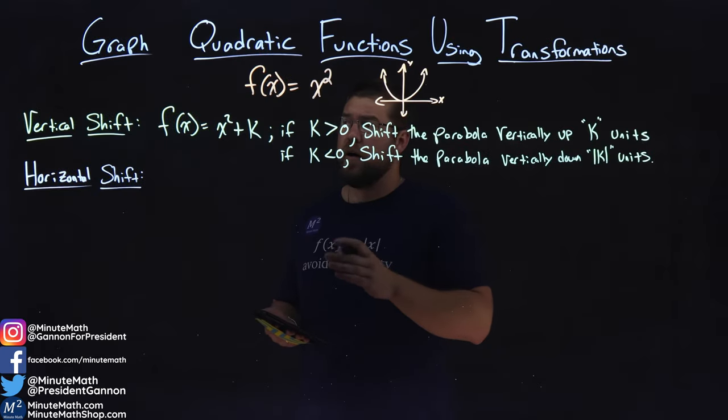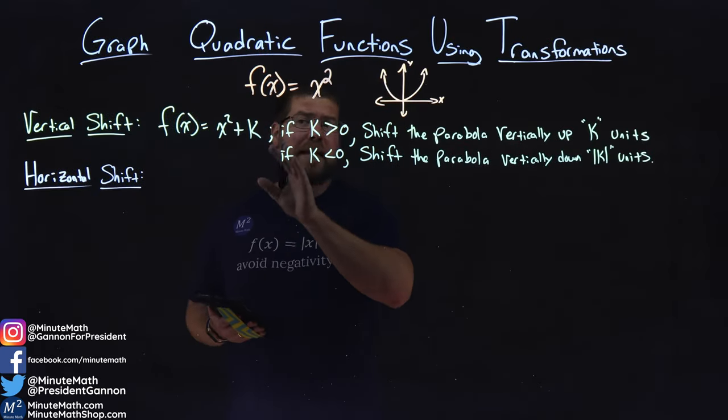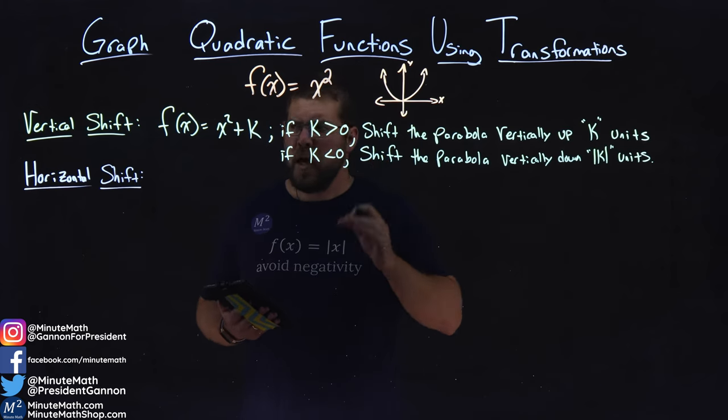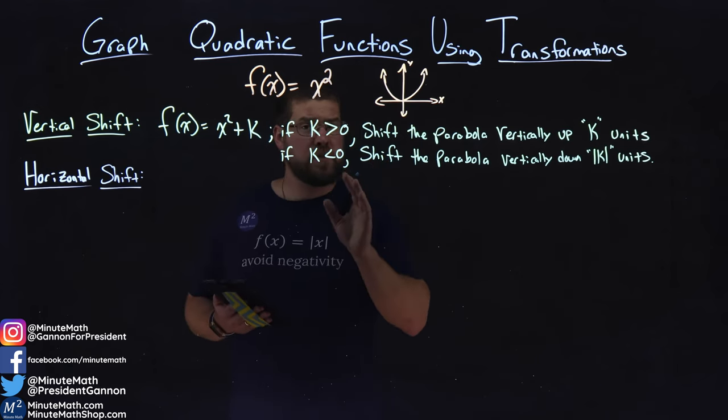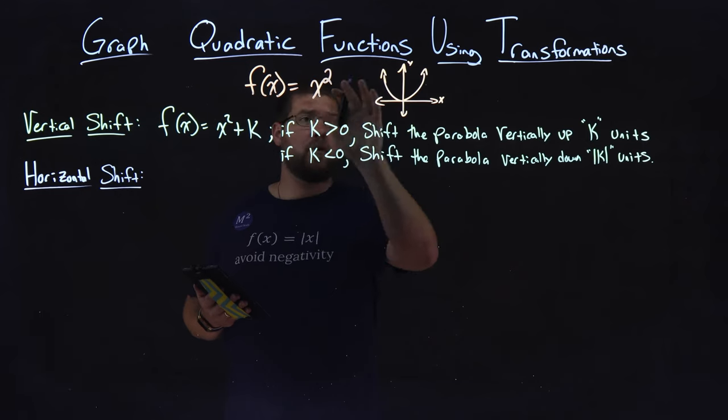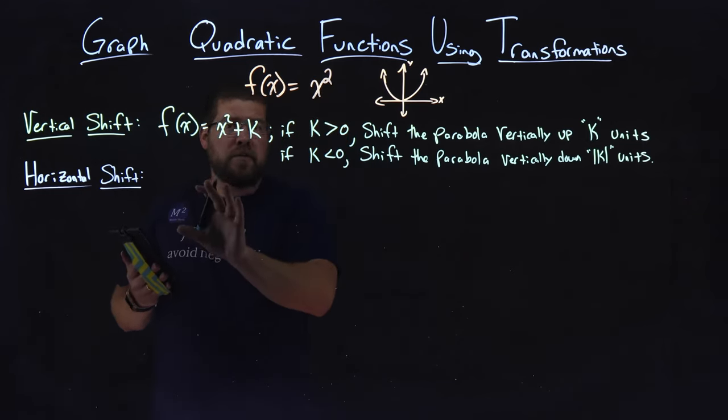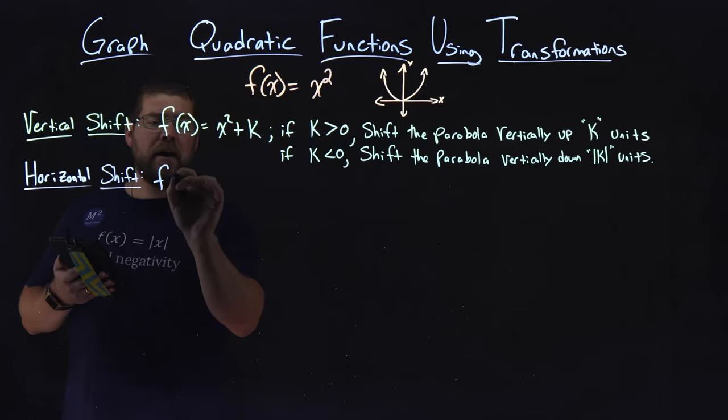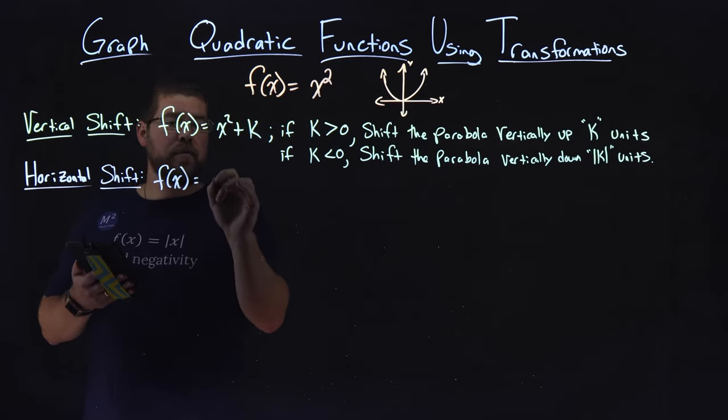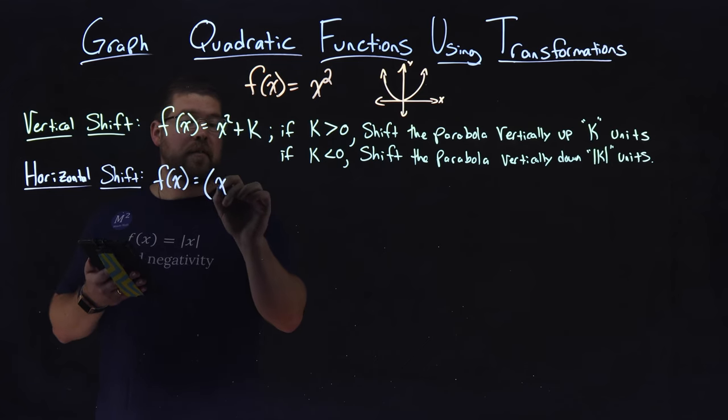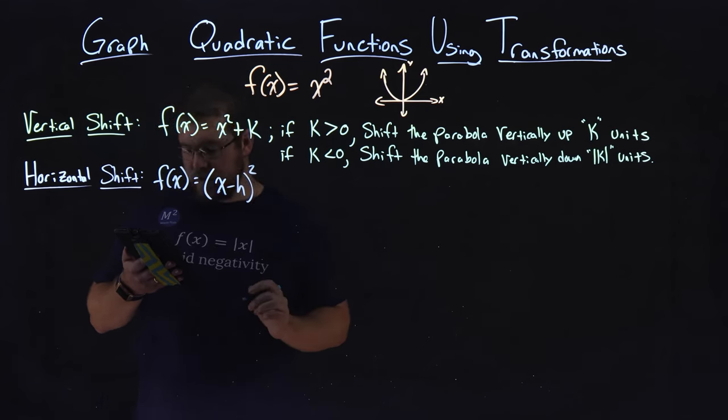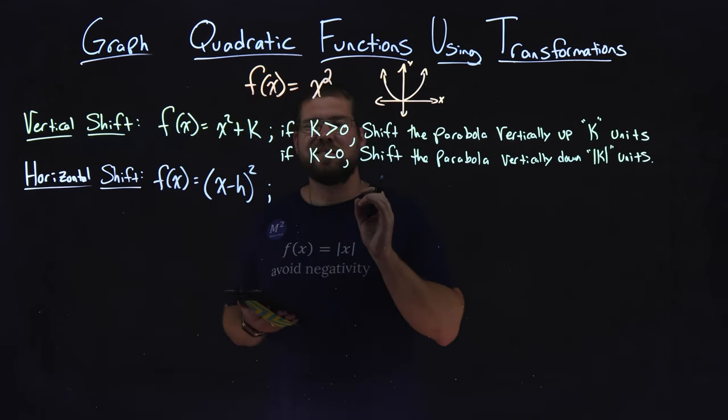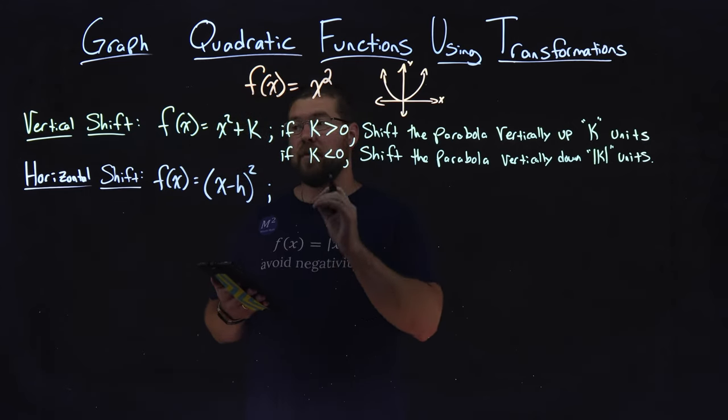In our previous video, we talked about a vertical shift and how the k value changed the function vertically. Now we're going to talk about a horizontal shift. We have our basic quadratic function, and our new equation that talks about the horizontal shift is f(x) equals (x minus h) all squared, and the h value is what causes this function to shift horizontally.